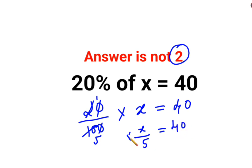Now in order to find the value of x, you will multiply both sides by 5. So this and this gets cancelled. So the value of x for this question is supposed to be what? 40 multiplied by 5. So the answer is 200.